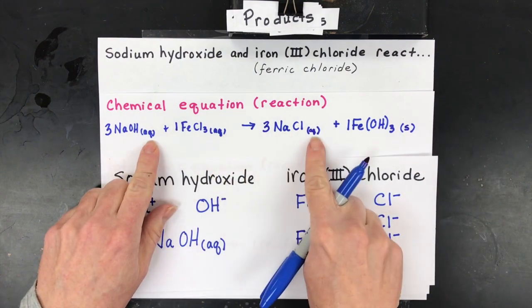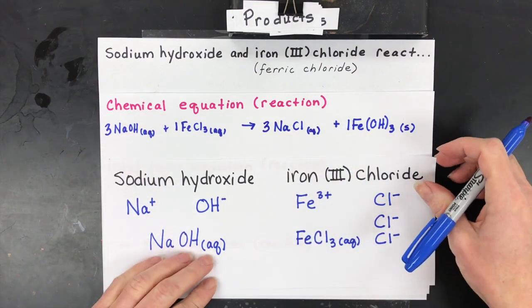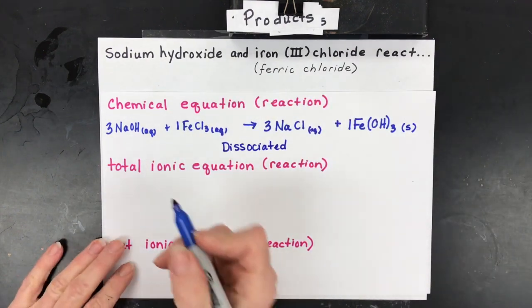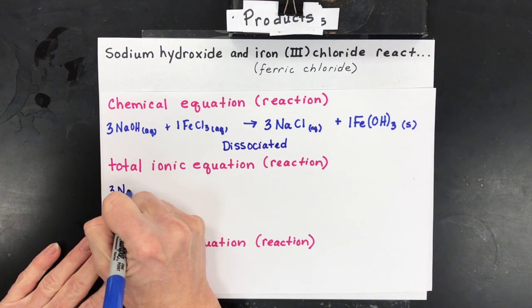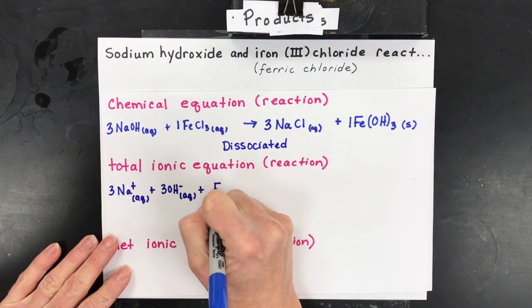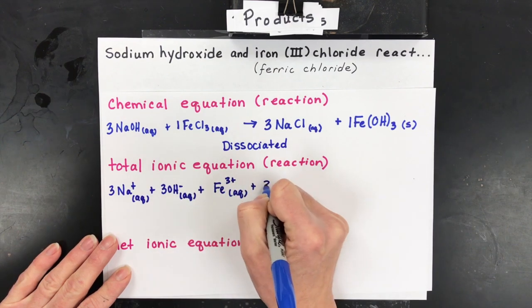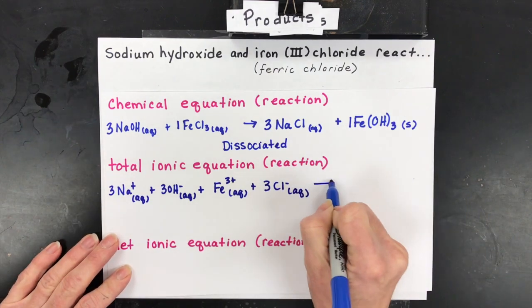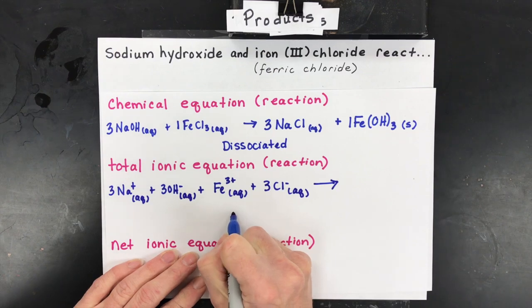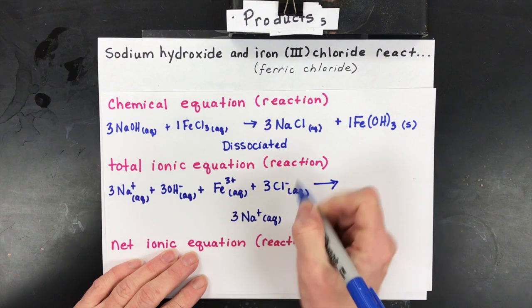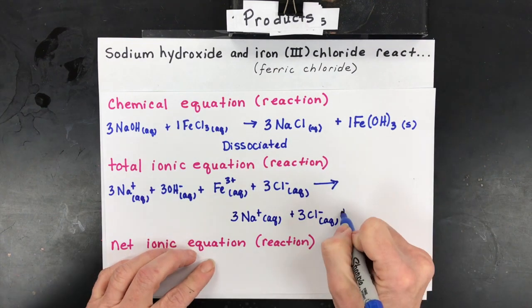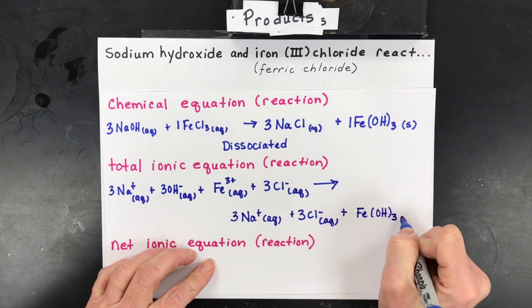What I need to do next though is take everything that has an AQ and break it into what are called dissociated ions. So that means I actually have three sodium ions and they're aqueous. I have three hydroxide ions and they're also aqueous. I have an iron three plus ion that's aqueous and I have three chloride ions that are also aqueous. Now I'm going to go down here and write the products. Again if it's got an AQ you dissociate those ions. So three sodium ions and three chloride ions. And then the rule is if it has an S, an L, or a G you do not dissociate it and we'd write it like this. It's just really you just recopy it.